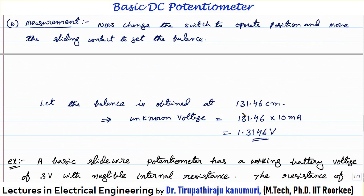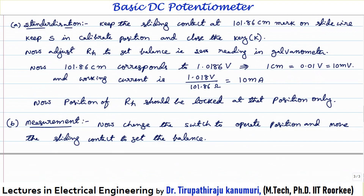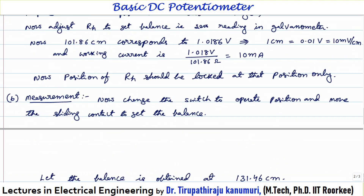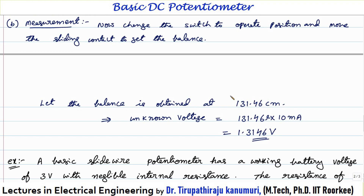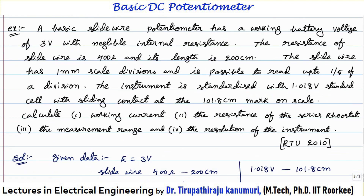Since standardization established a working current of 10 milliamperes and balance for the unknown is obtained at 131.46 centimeters, the unknown voltage equals 131.46 ohms multiplied by 10 milliamperes. Alternatively, since the voltage per centimeter is 10 millivolts, the unknown voltage equals 131.46 centimeters multiplied by 10 millivolts, giving a total voltage of 1.3146 volts.